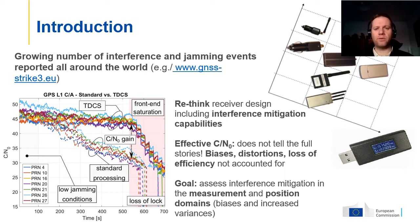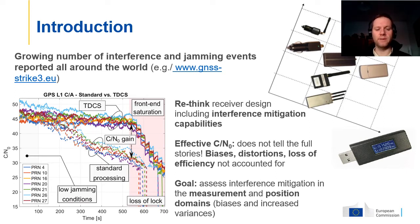Given the impact of such interfering events, it is necessary to rethink receiver design, including interference mitigation capabilities. Several works have shown that interference mitigation can be effective in improving receiver performance, and have analyzed as a principal metric the C/N0, which however does not tell the full story. Indeed, time domain interference mitigation can improve receiver performance in terms of C/N0, but it's not possible to tell if biases, distortion, or loss of efficiency are introduced by interference mitigation.